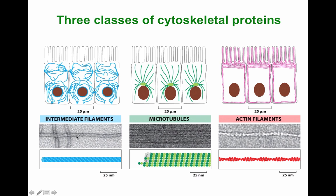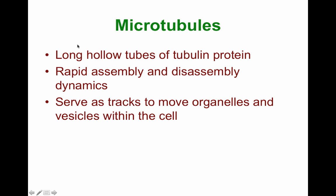The intermediate filaments, shown here on the left; the actin filaments, shown here on the right; and the microtubules, shown here in the middle. These are going to be the molecules we will be talking about today — the microtubules. Microtubules form long hollow tubes of tubulin protein. They have the capacity to rapidly assemble and disassemble, and therefore we tend to think of them as having what is called dynamic instability.